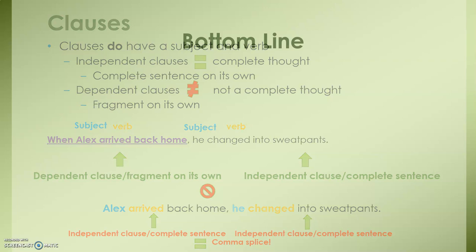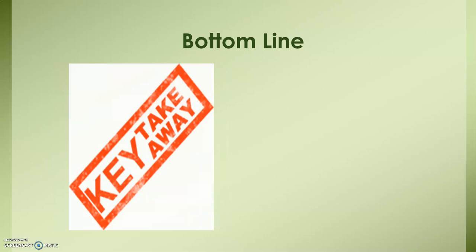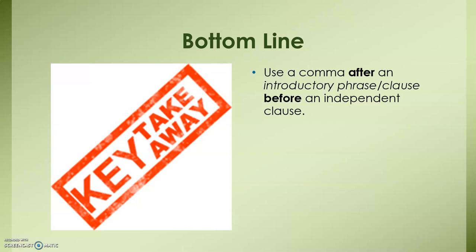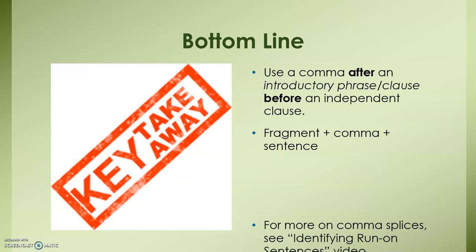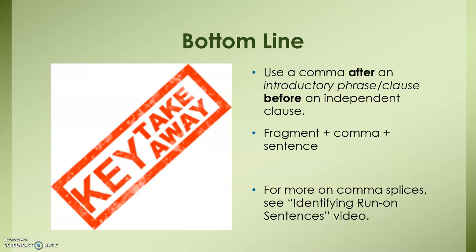The bottom line with all of that is basically to use a comma after an introductory phrase or clause before an independent clause. Ultimately, if the first part is a fragment, add the comma if the second part is a sentence. For more on comma splices and to see when you wouldn't split with a comma, please see our video on identifying run-on sentences. And, as always, check out the Writing Center if you need a little extra one-on-one help.